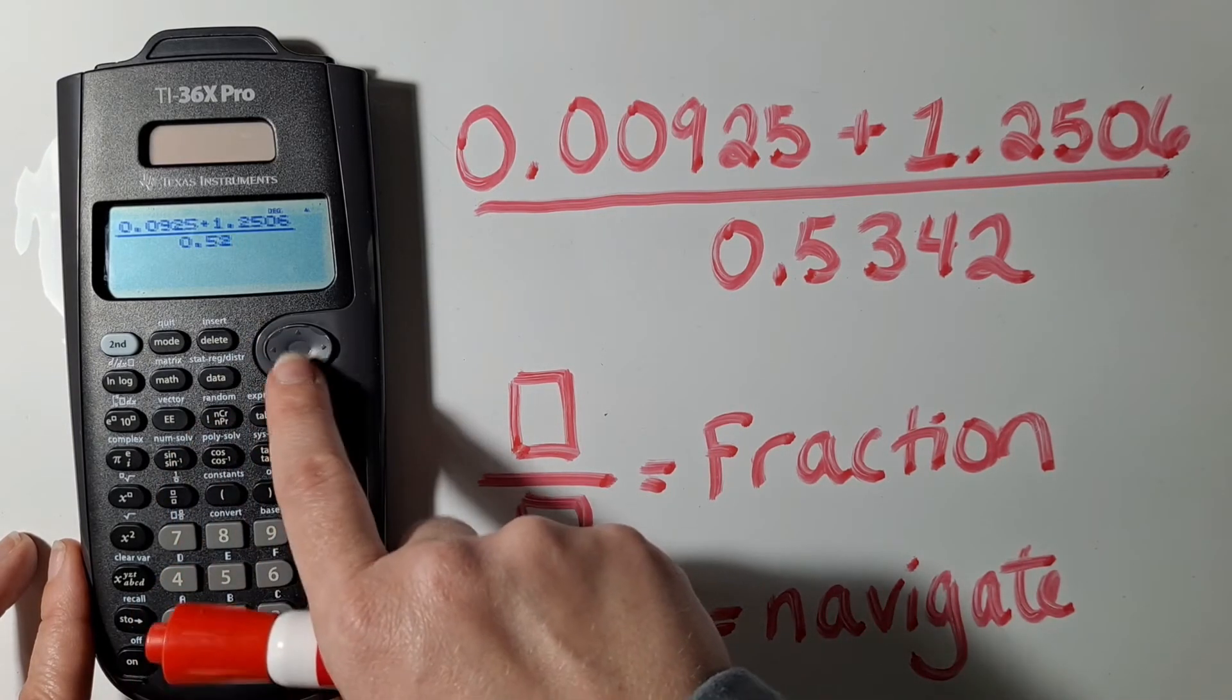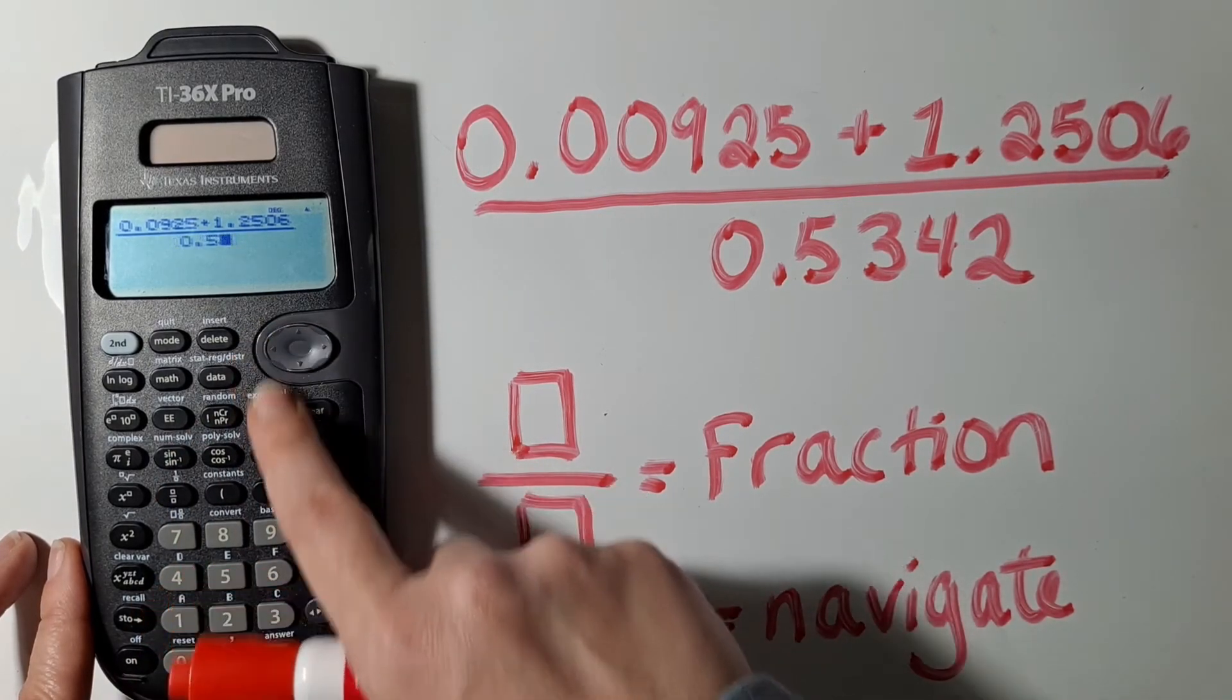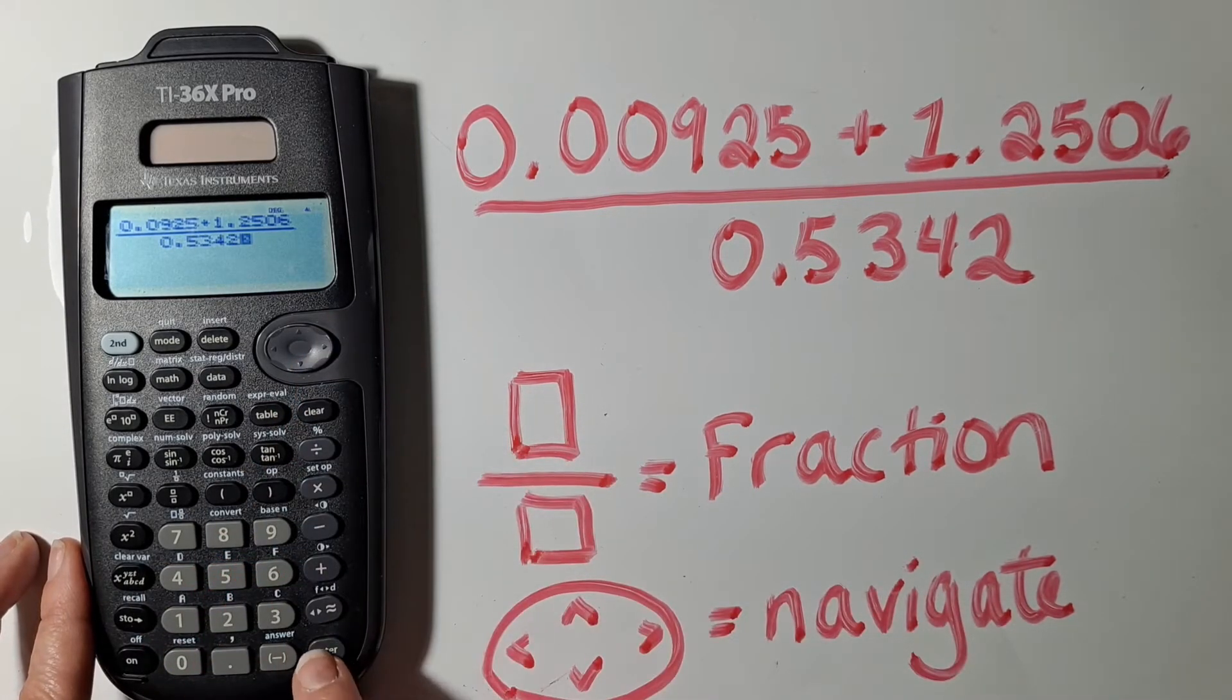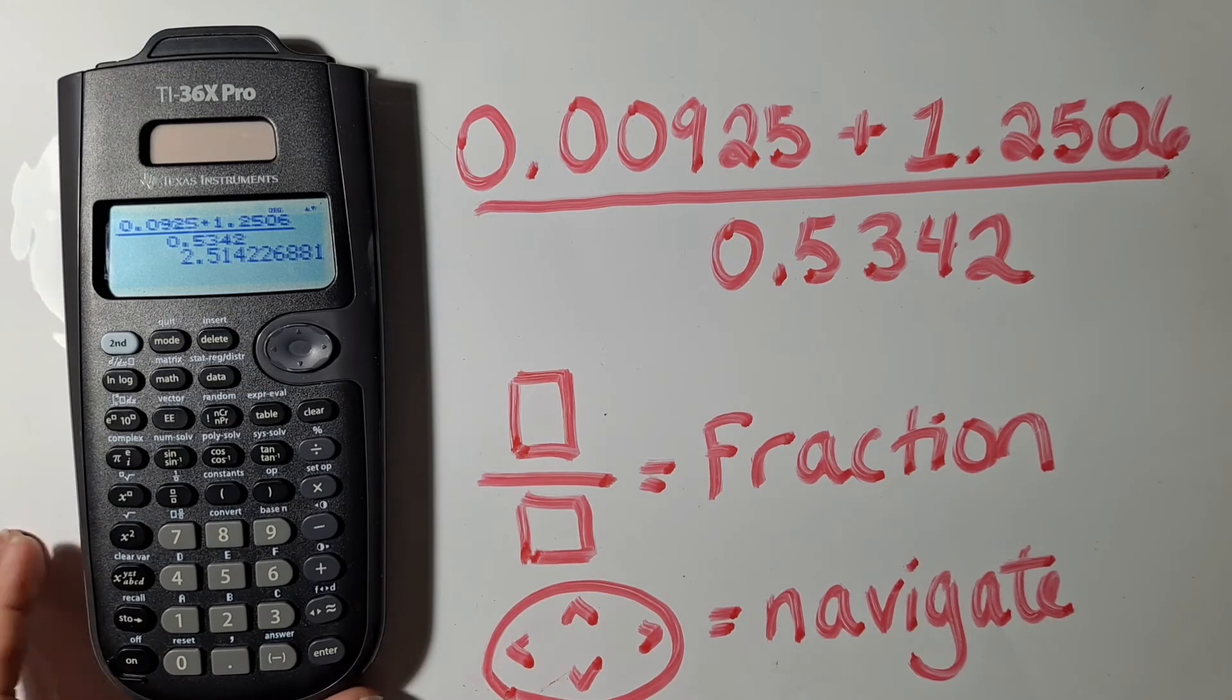And then I messed up, I typed 5.2 instead, so I can go back. I can type over it with 3, 4, 2. And then I can hit Enter and calculate that.